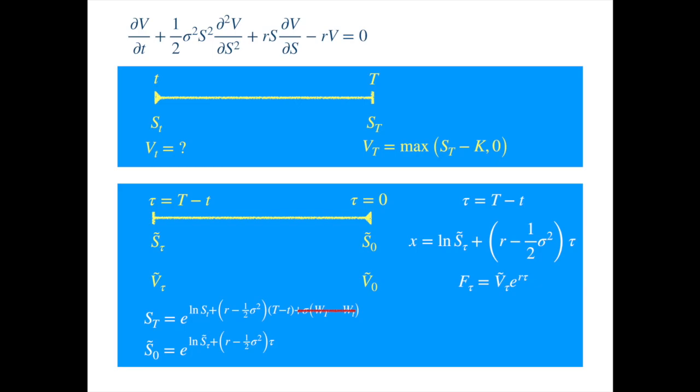So when we do these three transformations, the PDE will become a forward PDE, with constant coefficients, which is easier to solve. So let's start with the transformations.